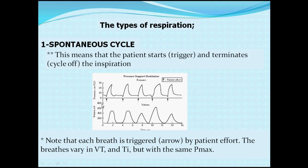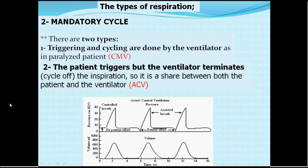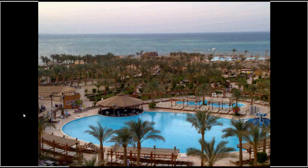Finally, types of respirations are divided into spontaneous and mandatory. In spontaneous breathing, the patient triggers and terminates the cycle — both initiation and termination are by the patient. In mandatory ventilation there are two subtypes: controlled mandatory ventilation, where triggering and cycling are both done by the ventilator (as in paralyzed patients); and assisted mandatory ventilation, where the patient triggers but the ventilator completes and terminates the cycle — as in assisted control volume-controlled ventilation.